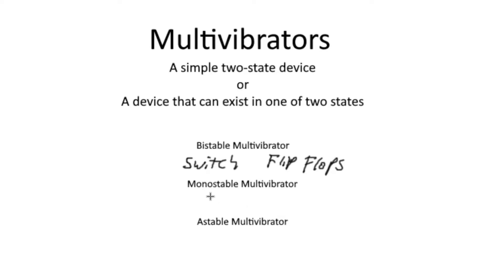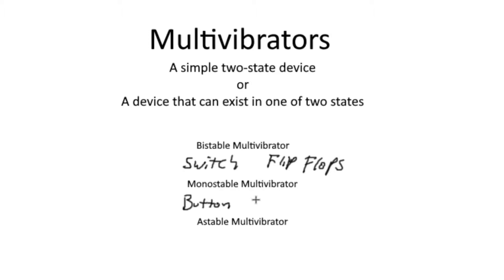A real-world analog to a monostable multivibrator would be a basic button. When you press a button, that is its trigger event — it gets triggered and will remain in its unstable, activated state for a predetermined amount of time before returning to its stable state once the trigger event has passed. An example of a circuit-based monostable multivibrator is something called a pulse lengthener. A pulse lengthener remains in its stable state until it receives a pulse, then remains in its unstable state for some amount of time past the event.